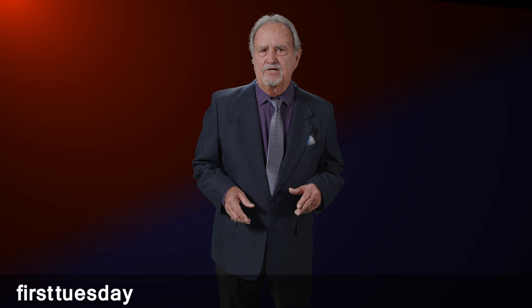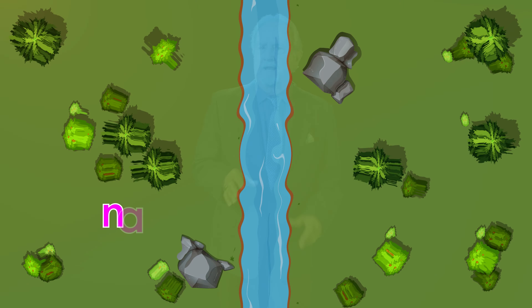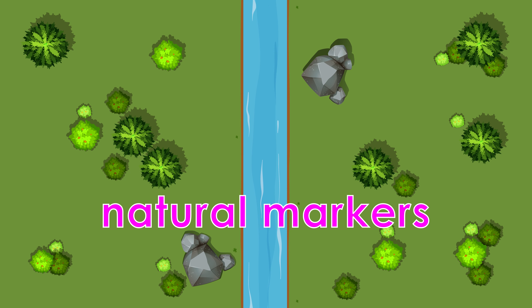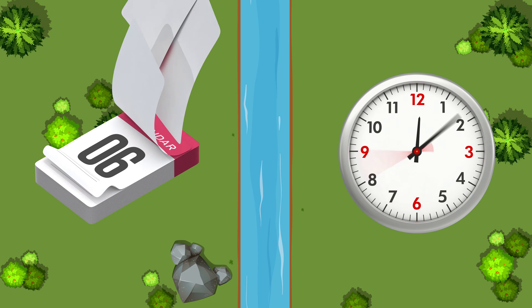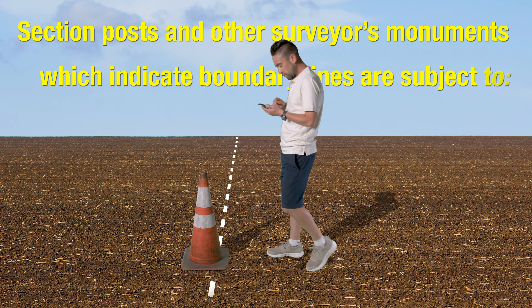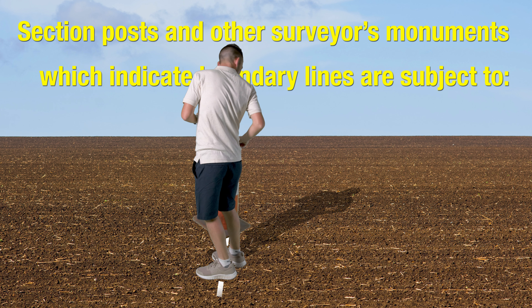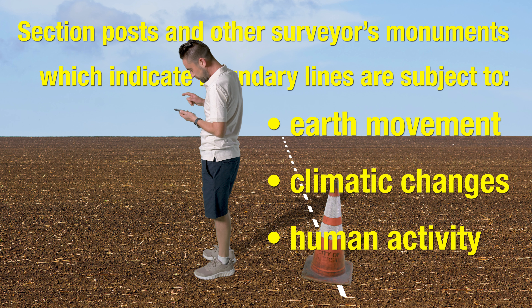Uncertainty over the exact location of a boundary line may arise in a number of circumstances. For example, where natural markers such as trees, boulders, or a creek were used to mark a boundary line, the location of the markers may have changed or disappeared over time. Further, section posts and other surveyors' monuments which indicate boundary lines are also subject to earth movement, climatic changes, and human activity.